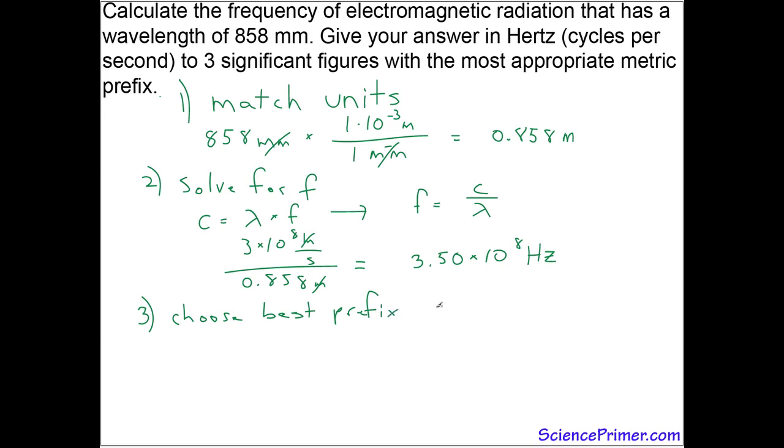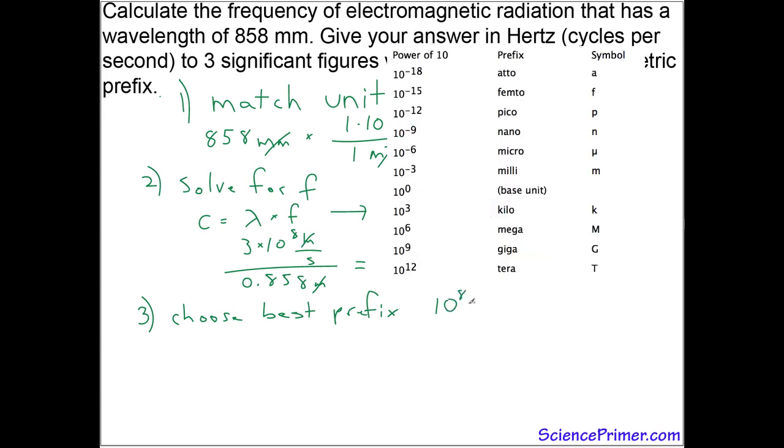The best way to do this is to look at where the exponent in the answer lies with respect to the table of metric prefixes. In this case, ten to the eighth hertz is greater than ten to the sixth and less than ten to the nine.